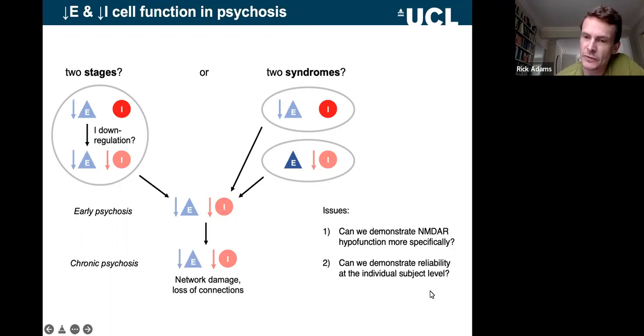And the second thing we want to be able to do is to be able to use these inferences at the individual patient level to perhaps assign treatments. If you could give an E-boosting drug to these people or an I-boosting drug to these people. But to do that, you really need to demonstrate reliability at the individual subject level, which has not really been tried very much using these modeling techniques because most people use them to look at group differences.